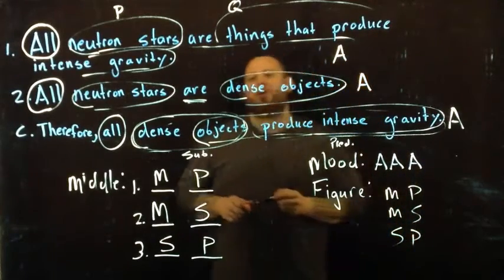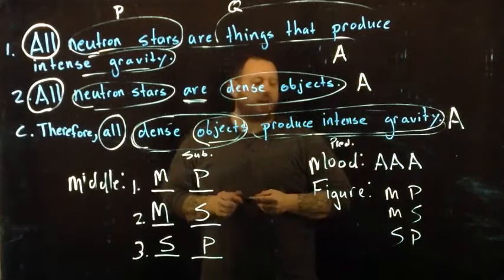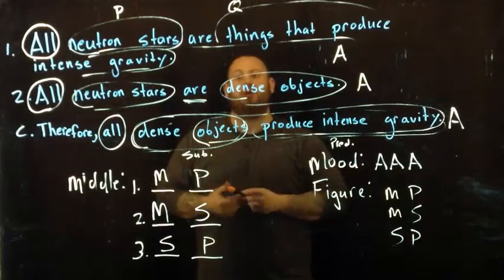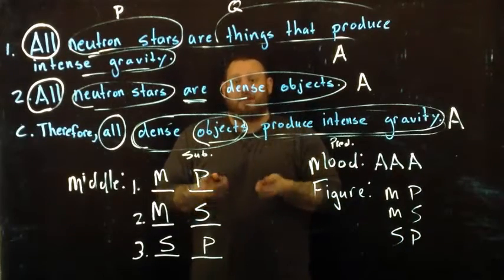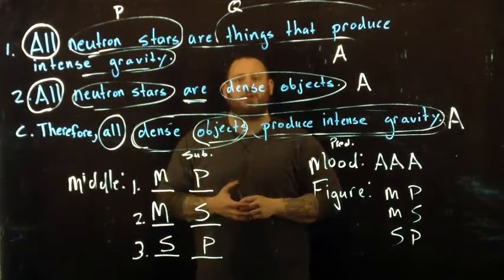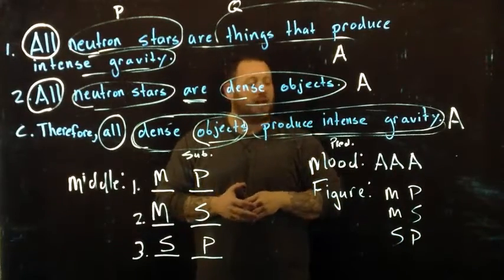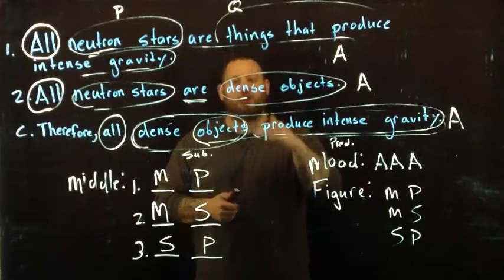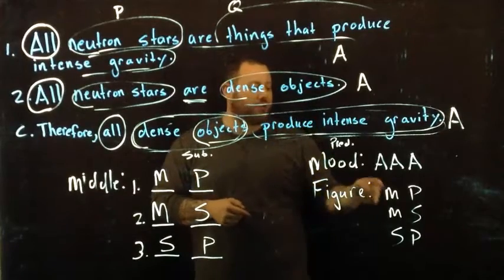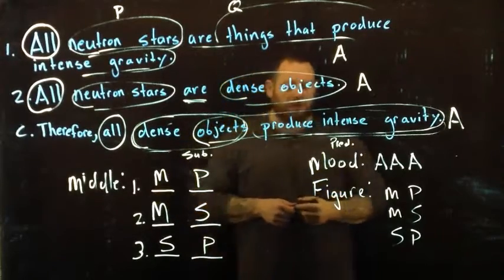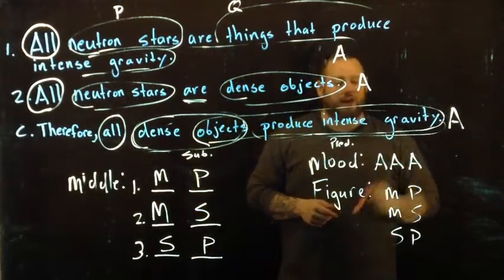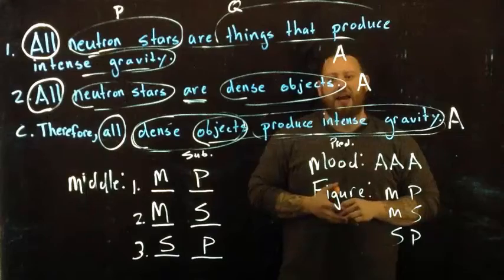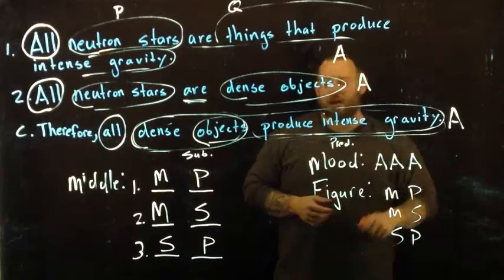What you do is then go to the sheet I provided for you on Canvas. Using that sheet, you'll look down and find your figure first. Once you find your figure, you'll find AAA to see if it's valid.